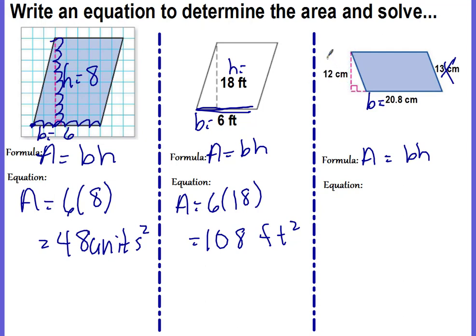The height has to be perpendicular to the base and they're showing us the height on the outside this time. This 12 is your height. Let's plug into our formula. Area equals the base, 20.8, times the height, which is 12.